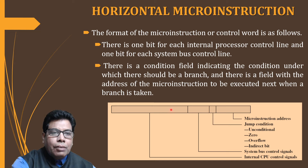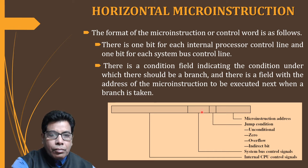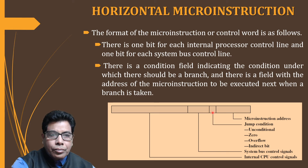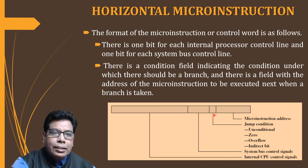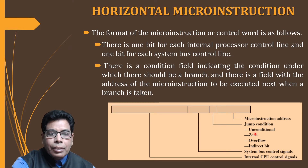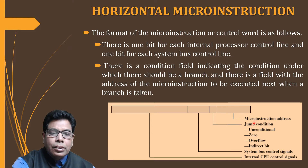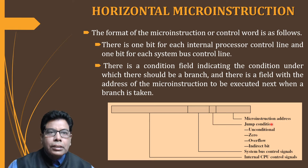After the CPU control lines, we have one bit for each system bus controller. Then we have the jump condition field for branching. There is a field with the address of the micro instruction to be executed next. The jump field has different conditions like unconditional, zero, overflow, and indirect. Depending on these conditions, the micro instruction address will change. If there is no jump and this bit is zero, it will go to the next address.